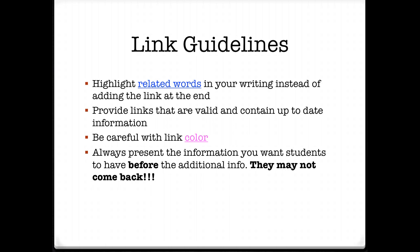Of course, you want to provide links that are valid and contain up-to-date information. If you give a link that gives wrong information, your entire article is going to seem like you don't know what you're talking about. You need to make sure you check your facts. You can't just link whatever. Don't link to Wikipedia — if you wouldn't use it as a source in a paper, you probably shouldn't use it as a source in your article.